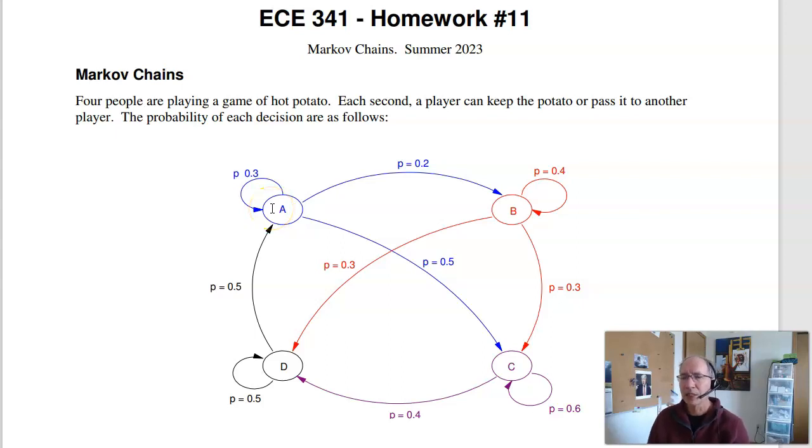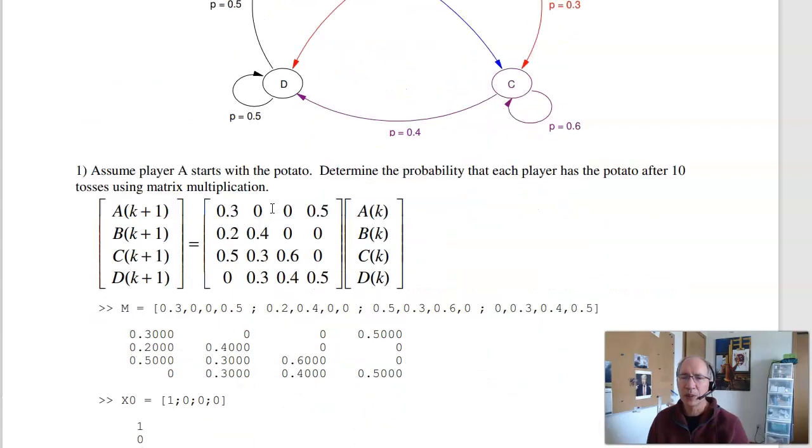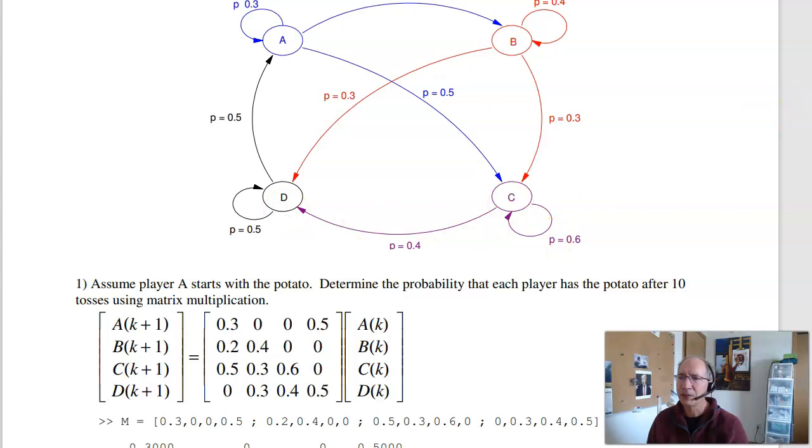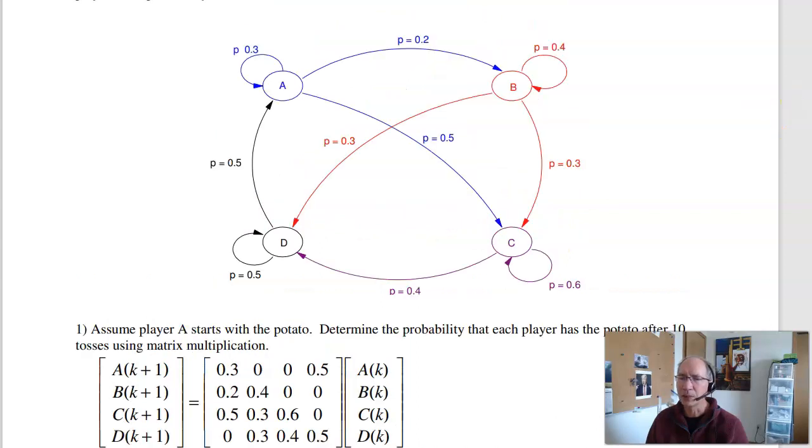There's a couple ways to solve this. In problem one, we're looking at matrix multiplication. I first set up a state transition matrix. This is the probability that A, B, C, D have the hot potato. Suppose A has the hot potato. So this is 1, 0, 0, 0.